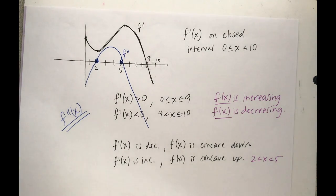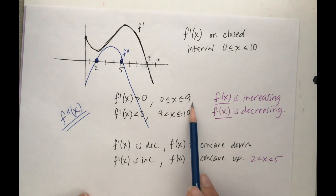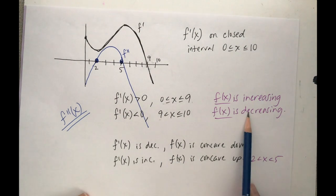So now finally, let's do this last tie in. Now what I'm going to do is tie everything together and make a sketch of the function f(x). So it's increasing from 0 to 9, decreasing from 9 to 10, and I have to be concave up from 2 to 5, concave down everywhere else.